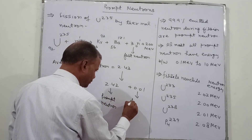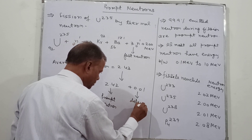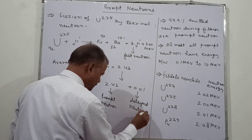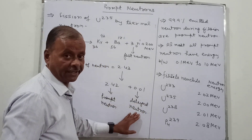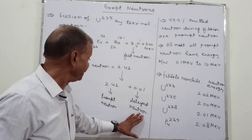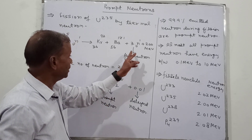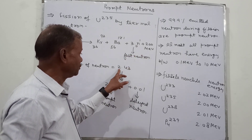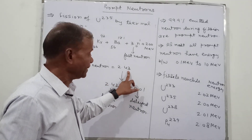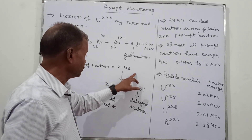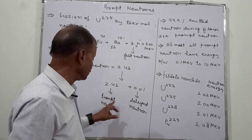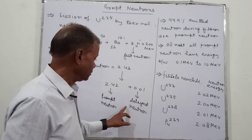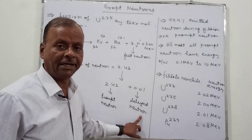Out of the average 2.43 neutrons, 2.42 neutrons are the prompt neutrons and 0.01 neutrons are the delayed neutrons. I will tell you about the delayed neutrons in a later video.